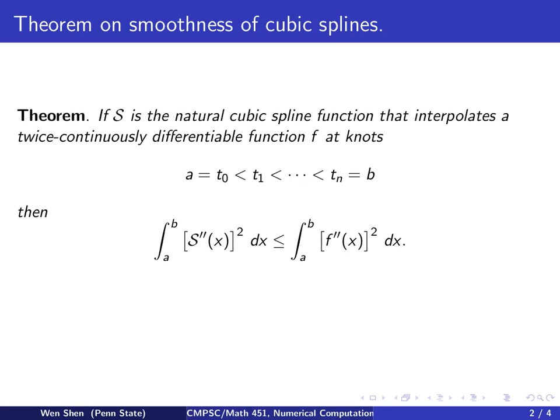So this theorem actually says, among all functions that go through the knots, go through those set of points, the natural cubic spline is the one that has the smallest curvature, therefore is the smoothest curve that goes through.